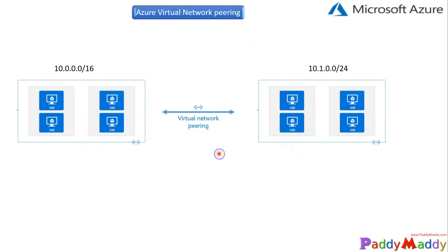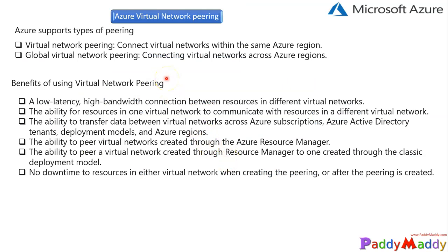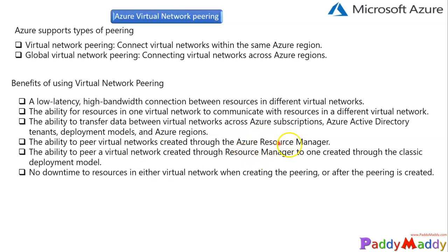Virtual network peering is supported globally across different Azure regions and across different subscriptions, provided you have the appropriate permissions. The benefits include low latency and high bandwidth connectivity between resources in different virtual networks, and the ability for resources in one virtual network to communicate with resources in another. It supports both ARM and classic deployment models, though classic is rarely used. Configuration can be done via CLI, PowerShell, or the portal with no downtime required.